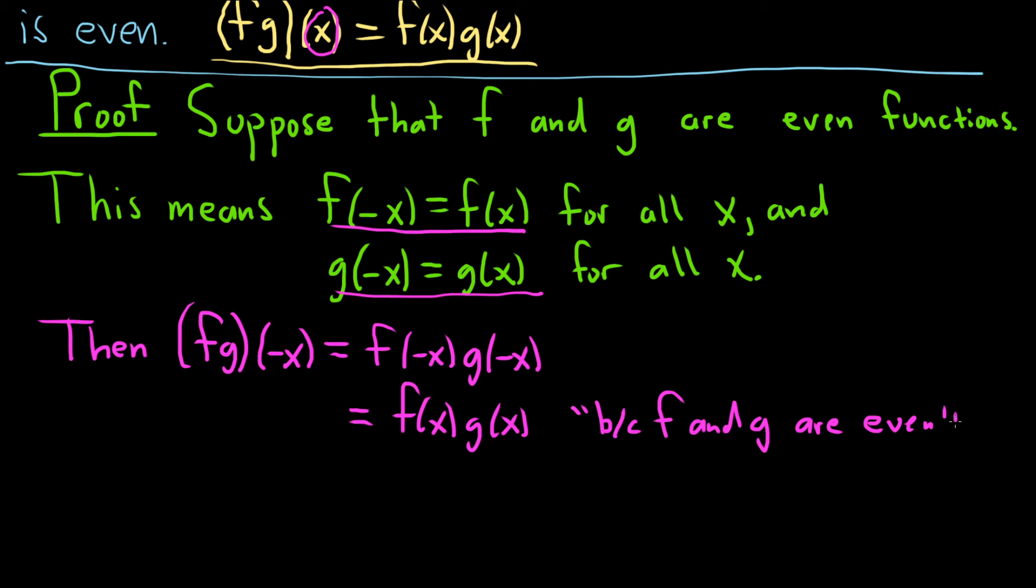This is the key step. And this is precisely the definition of the product, so fg of x. And this is true for all x. There was no restriction on x. Everything here is true for all x. This shows that f times g is even.